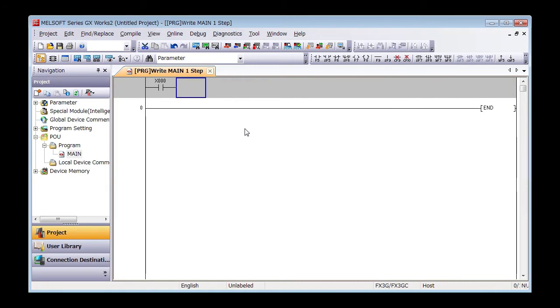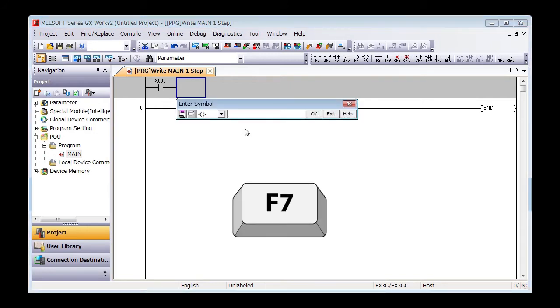Example in GxWorks2. Move the cursor next to the contact and press F7. Then enter symbol will pop up. Now enter T0 space K100 and enter.